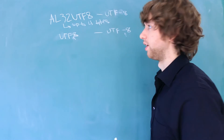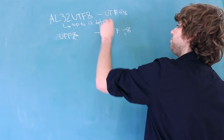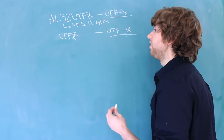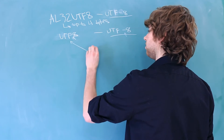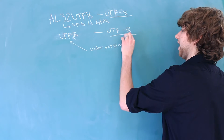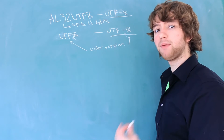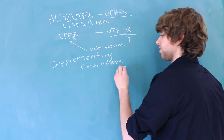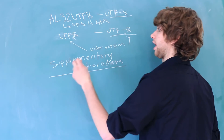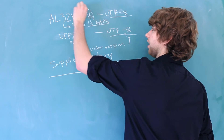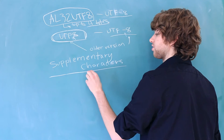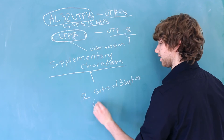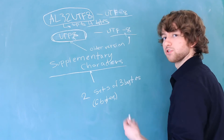Here is a good question: if both of these are using the UTF-8 encoding, what could possibly be different between the two? Well, the difference is that UTF8 is using an older version of UTF-8. Overall they work about the same, but the primary difference is how things are stored — specifically things known as supplementary characters. Supplementary characters are the characters that take four bytes in AL32UTF8. The difference with UTF8 is that each supplementary character takes two sets of three bytes, totaling six bytes. So the way they are stored is slightly different.